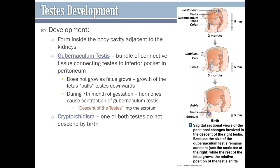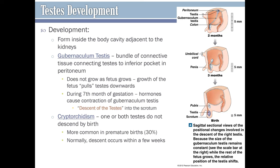Around the seventh month of gestation, hormones cause further contraction of the gubernaculum testis, allowing the testes to descend into the scrotum. Cryptorchidism is when one or both testes do not descend by birth — this occurs in about 30% of premature births and only about 3% of full-term births. Normally descent occurs within a few weeks after birth, and if it doesn't, it can be corrected surgically. Cryptorchid testes will not produce sperm because sperm production requires a lower body temperature than the core body temperature — if the testes remain in the abdominal pelvic cavity, it is too warm.